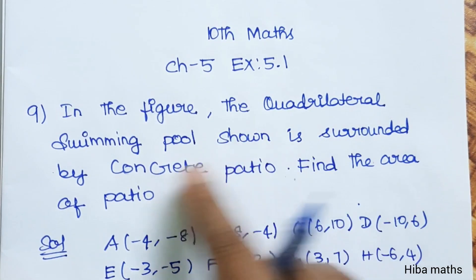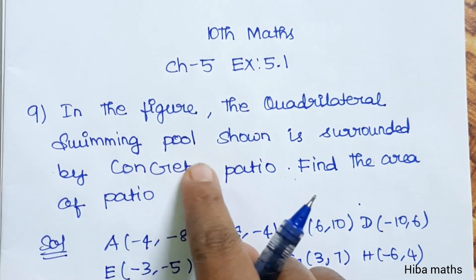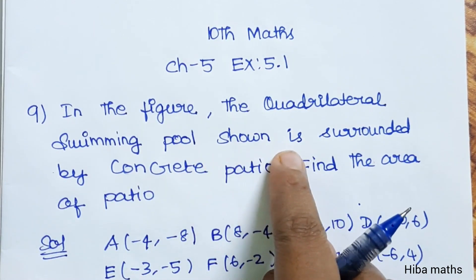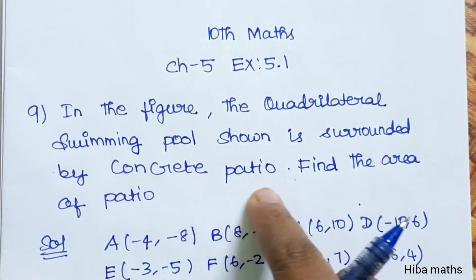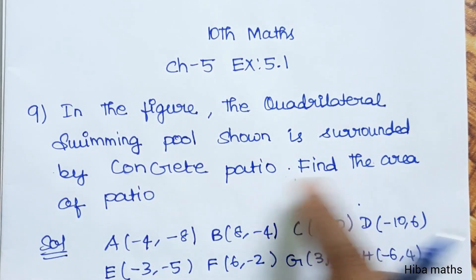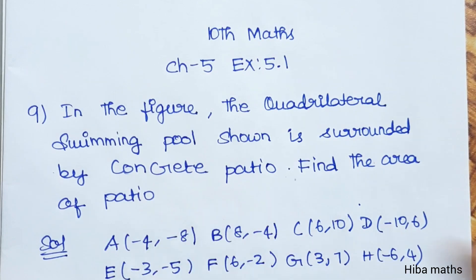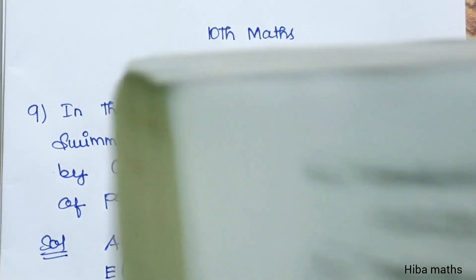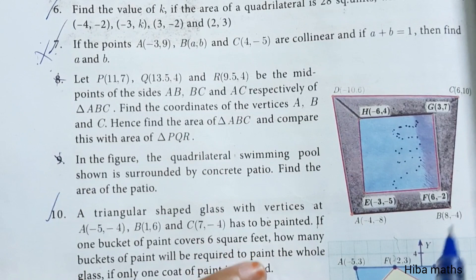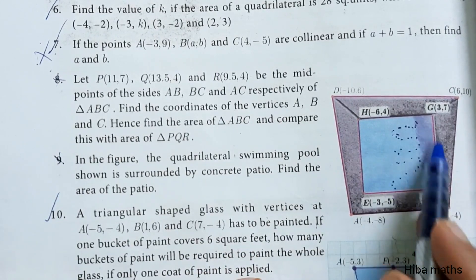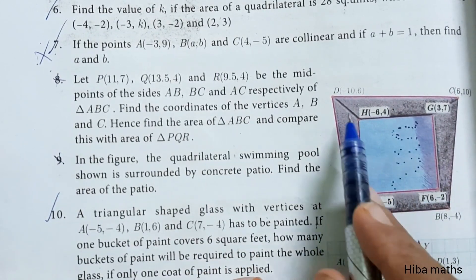In this figure, the quadrilateral swimming pool is surrounded by concrete. Find the area of the path. We have a diagram in the book. This is a swimming pool.